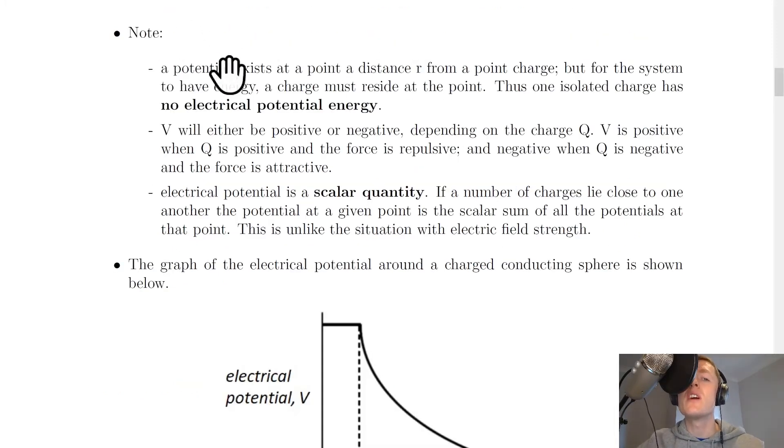So we've got a few things to note here. Firstly, a potential exists at a point a distance R from a point charge, but for the system to have energy, a charge must reside at the point. Thus, one isolated charge has no electrical potential energy. So a charge on its own will have no electrical potential energy.